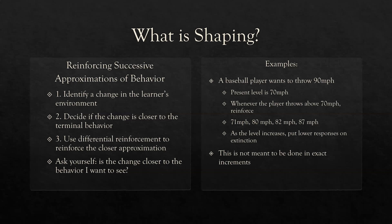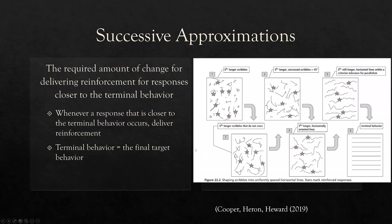This is not meant to be done in exact increments. People make the mistake of thinking shaping is a staircase upward — where each increment has to be a perfect amount in between, like 70, 75, 80, 85. It doesn't work like that. The behavior is not that predictable. We are looking for all opportunities to slowly but surely increase those approximations. Successive approximations are the required amount of change for delivering reinforcement for responses closer to the terminal behavior — and that's for you to decide. Whenever a response closer to the terminal behavior occurs, we deliver reinforcement. It's a very simple intervention, but it takes a lot of skill and precision.